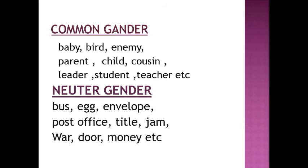Common genders — words that can refer to either sex. Examples: baby, bird, enemy, parent, child, cousin, leader, student, teacher, etc. Common gender denotes either sex and the same word may be used for both male and female, like: creatures, friend, guest, passengers, tourist, etc.